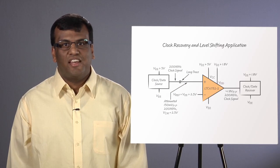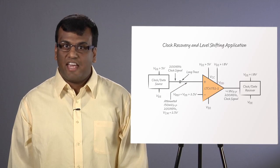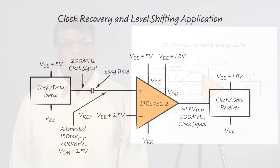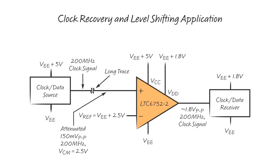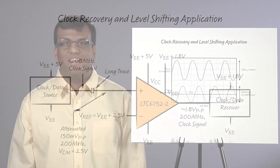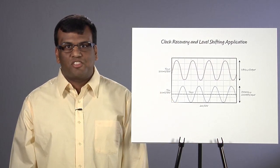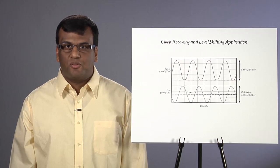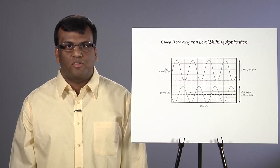Let's look at a few applications that take advantage of the high speed and versatility of the LTC6752 family. In this slide, a high speed 200 MHz clock signal, coming from a source operating from 5V, travels through a long trace and is attenuated to 150 mV peak to peak. The high toggle rate and split supply feature of the LTC6752-2 allows the input signal to be recovered as a full scale 1.8V output signal.